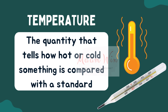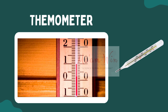Temperature is the quantity that tells how hot or cold something is compared with the standard. A common thermometer measures temperature by showing the expansion and contraction of a liquid in a glass tube using a scale. If there is a difference in temperature between two objects, heat flows. Therefore, temperature is the measurement of how hot or cold something is.